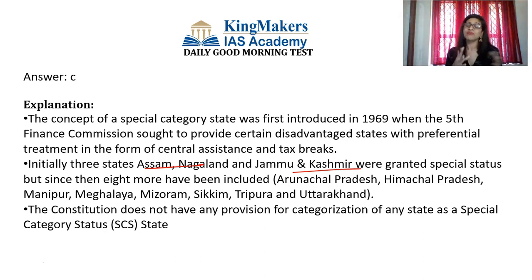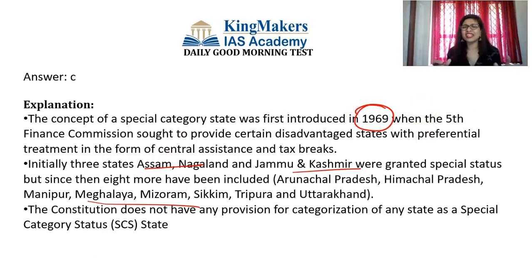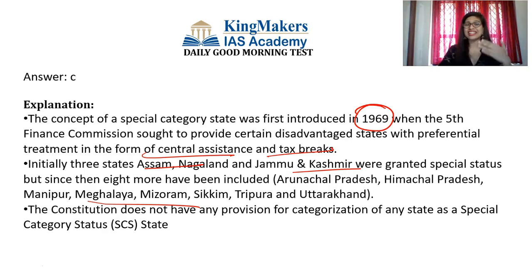The last state to be added to the special category status list was Uttarakhand, added in 2010. If the current conditions persist, more states may be added. There are still states that are not performing well on economic and social indicators. So as schemes progress, we may see more states coming under the special category status. Let's see how it develops.